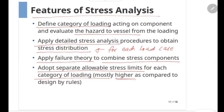That is, if design by rules approach has got a factor of safety of 3.5 on ultimate tensile strength, the design by analysis rules will have factor of safety which will be 3, which is less than 3.5.